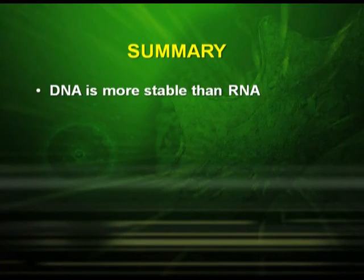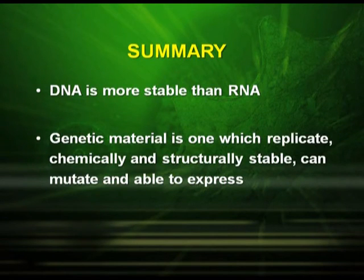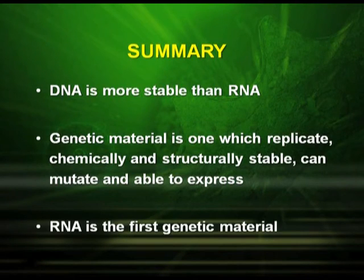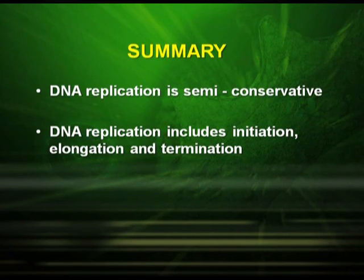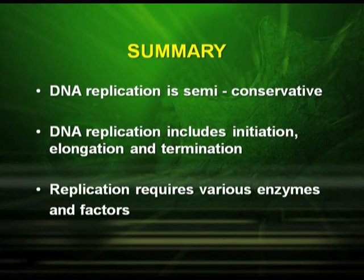Summary of the topics: DNA is more stable than RNA. The genetic material is one which can replicate, is chemically and structurally stable, can mutate, and is able to express. RNA is the first genetic material. DNA replication is semi-conservative. DNA replication includes initiation, elongation, and termination, and requires various enzymes and factors.